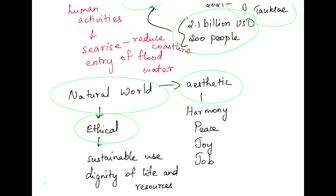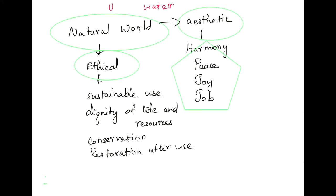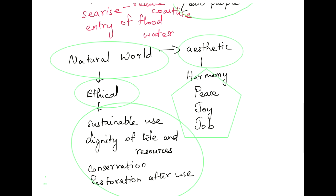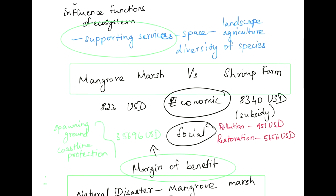The aesthetic terms are harmony, peace, and joy. The ethical terms are sustainable use, dignity of life and resources, conservation, and restoration after use. Thank you for attending today's topic and we will see you again in another topic.